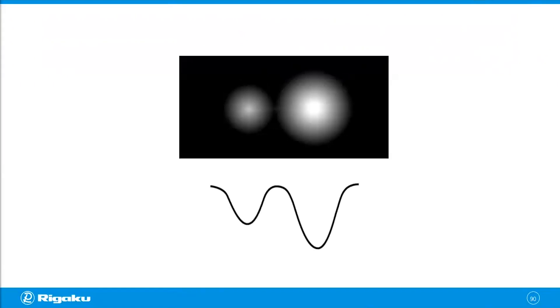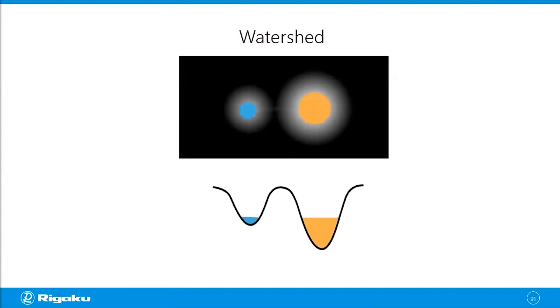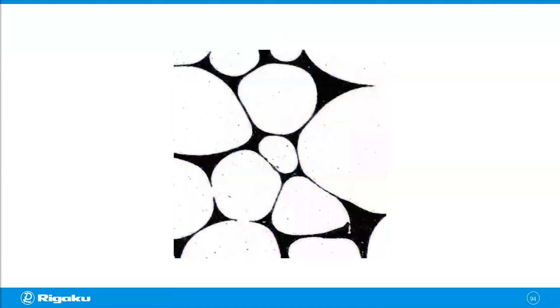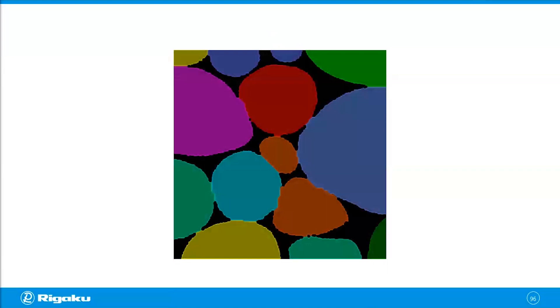Now you can look at this image as two wells and apply another operation called watershed. Watershed essentially places a water source at the bottom of each well and starts filling them up. When you get to the point where the two water sources — one orange, one blue — meet, you draw a line there. This is how you figure out where two connected cells should be separated. Going back to the original image, which is already segmented into polymer and air as a binary image, you can apply distance transform and watershed to separate the individual cells.